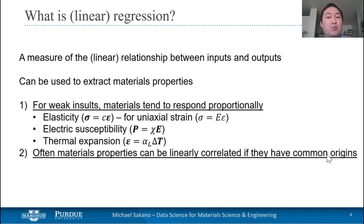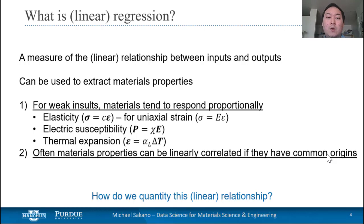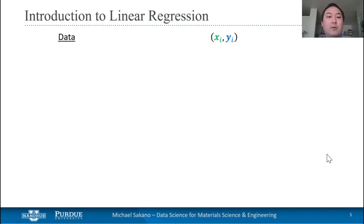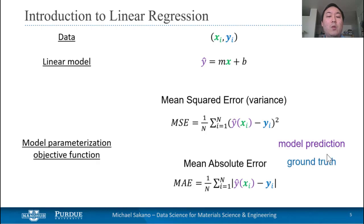Second, materials properties can actually be linearly correlated if they come from common origins, and we'll show an example of that later on. So how do we actually quantify this linear relationship? First, we're going to start with our x and y data pairs and define our linear model. We would like to obtain an optimal m and b — slope and y-intercept — from our linear model, and this can be done by minimizing the objective function. Shown here are two possible objective functions that are very common in the literature: mean squared error and mean absolute error.